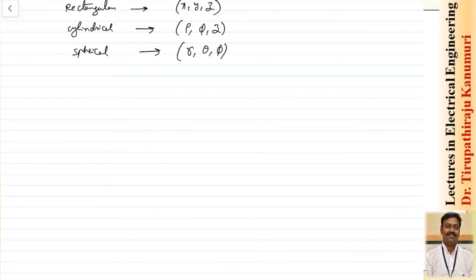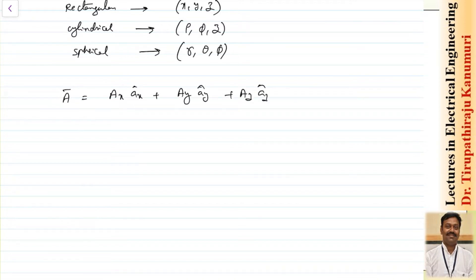For this, there is a simple approach. Let us take, for example, a vector A in the rectangular coordinate system — it can be any coordinate system, the others can be done in a similar way. So we have Ax in the x direction, Ay in the y direction, and Az in the z direction. Let us say I want to convert this to the spherical coordinate system.